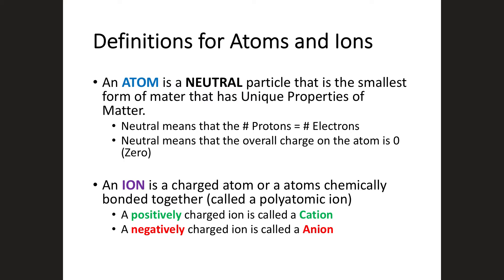Let's talk about a couple of definitions we need to understand before drawing Bohr models. An atom is always going to be a neutral particle — a neutral particle that has unique properties of matter. It's always an element and the smallest form of matter. Neutral means the number of protons in an atom equals the number of electrons, and the overall net charge on the atom is zero.